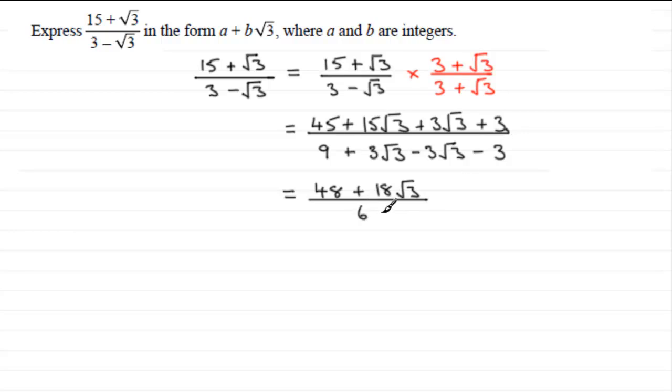We're nearly there now. We've got to get this in this form a + b√3. Two terms at the moment, then we've just got the one term, so we've got to divide the 6 into each of these two terms. 6 into 48 goes 8 times, and 6 into 18 goes 3 times. So you're going to end up with 8 + 3√3, or you could just pull out 6 as a common factor on the top, and then that would leave you with 8 + 3√3, and then that's all divided by 6. The 6s cancel.